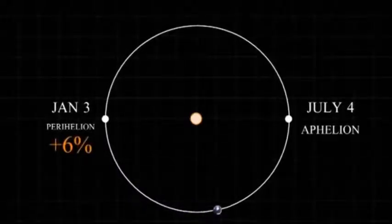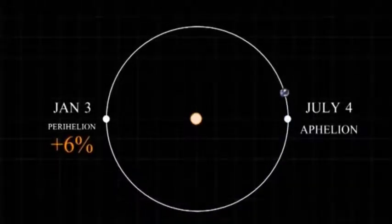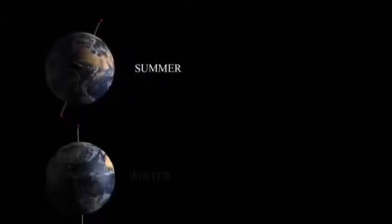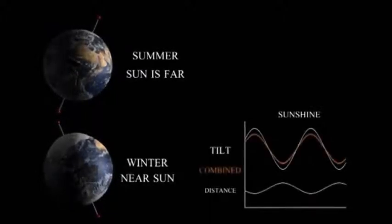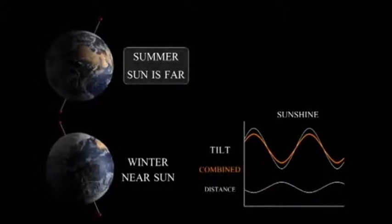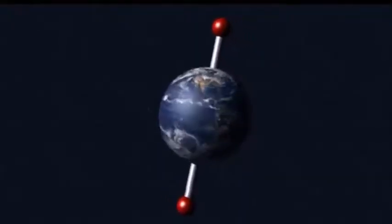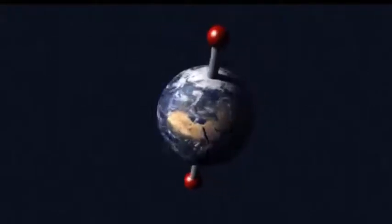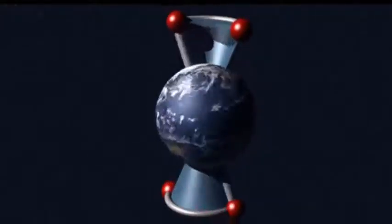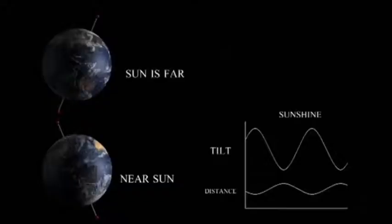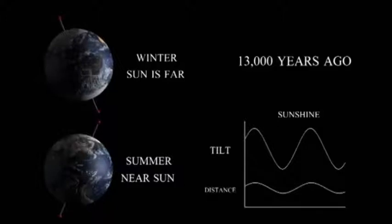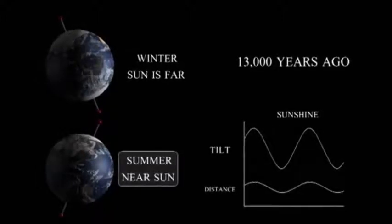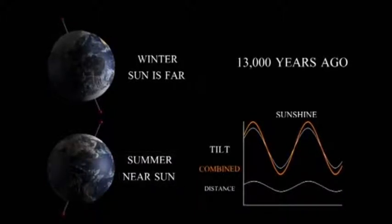Earth as a whole receives 6% more sunlight during January than it does in July. The seasons change because the North Pole sometimes tilts towards the Sun and sometimes tilts away. The change in the distance to the Sun works against the change in the seasons, moderating the seasons in the North, since the Earth is furthest away in July. But this was not always true. The Earth's axis is moving in a circle — it's spinning like a top. This is called precession. In fact, 13,000 years ago, the tilt of the Earth was reversed. When the Earth was closest to the Sun, it was summer in the North. The distance change didn't oppose the seasons — it amplified them, making them more extreme.